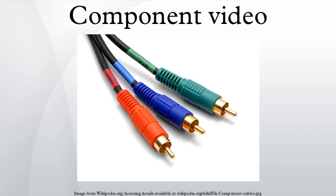Component video is a video signal that has been split into two or more component channels. In popular use, it refers to a type of component analog video information that is transmitted or stored as three separate signals. Component video can be contrasted with composite video, in which all the video information is combined into a single line-level signal that is used in analog television. Like composite, component video cables do not carry audio and are often paired with audio cables.